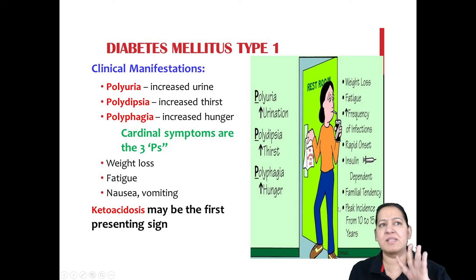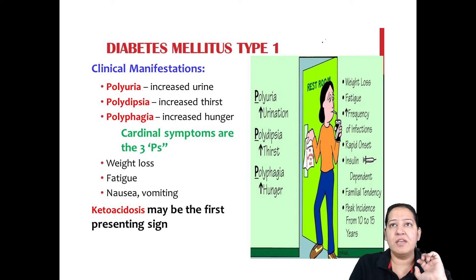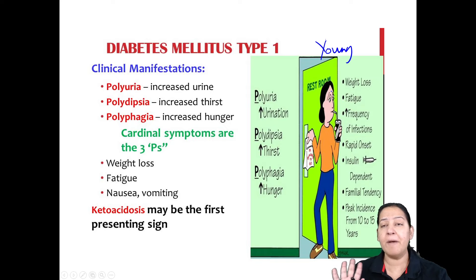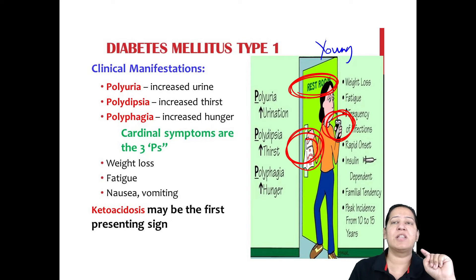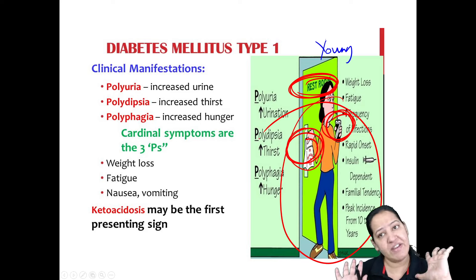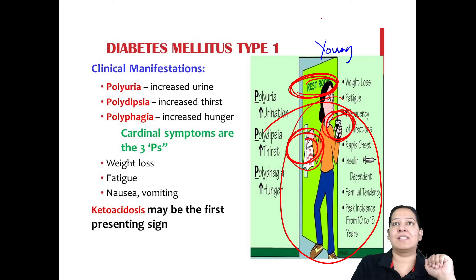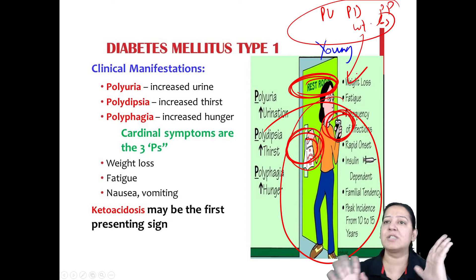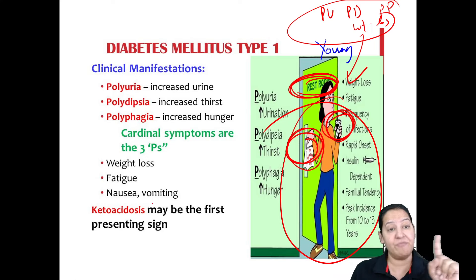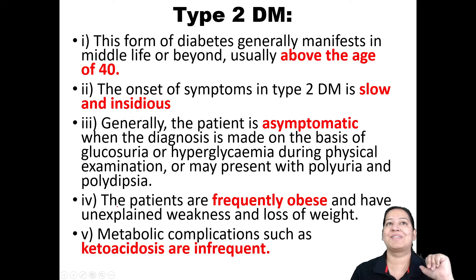Looking at this diagram, you can see a young girl representing type 1. She is drinking more — polydipsia; eating more — polyphagia; and frequently using the restroom — polyuria. All four features — polyuria, polydipsia, polyphagia, and weight loss — are visible in this one diagram. The most common acute complication in type 1 diabetes is ketoacidosis, which I will explain today.